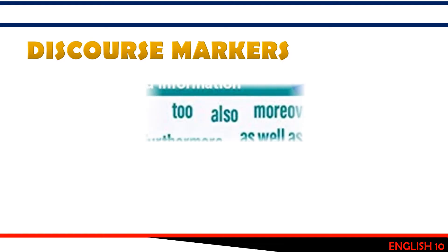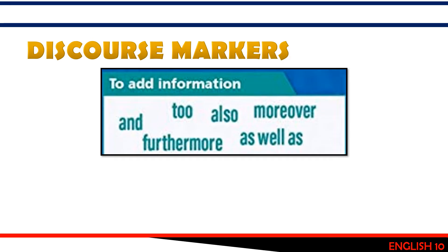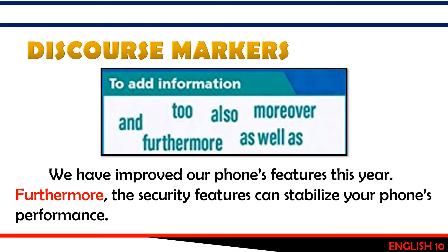Take note of the different groups of discourse markers according to their usage. The first group is used to add information. Examples include: and, also, moreover, as well as, furthermore. For example: 'We have improved our phone's features this year. Furthermore, the security features can stabilize your phone's performance.' Here, 'furthermore' is used to add additional information to the first statement.